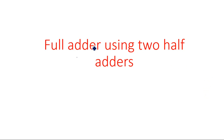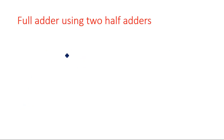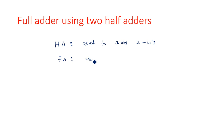Hi everyone. In this video I am going to explain about the full adder using two half adders. In the previous videos we have seen how to construct a half adder and how to construct a full adder — we started from the truth table and designed the logic circuit. Now, the basic difference: a half adder is used to add two bits, and a full adder is used to add three bits.